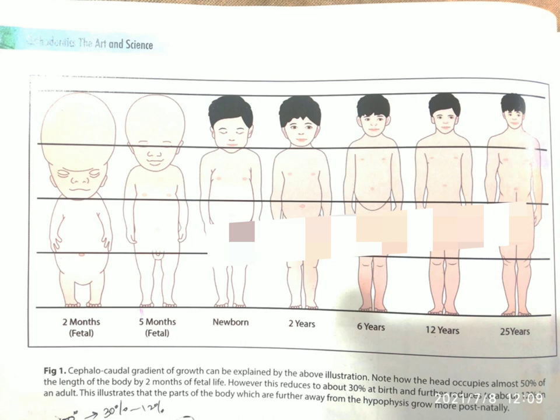This picture gives a clear view on the cephalocaudal gradient of growth. It explains that around two to three months of intrauterine life, the head takes about 50 percent of the total body length. In the starting days of intrauterine life, the head portion is really big — it occupies 50 percent of the total body length.